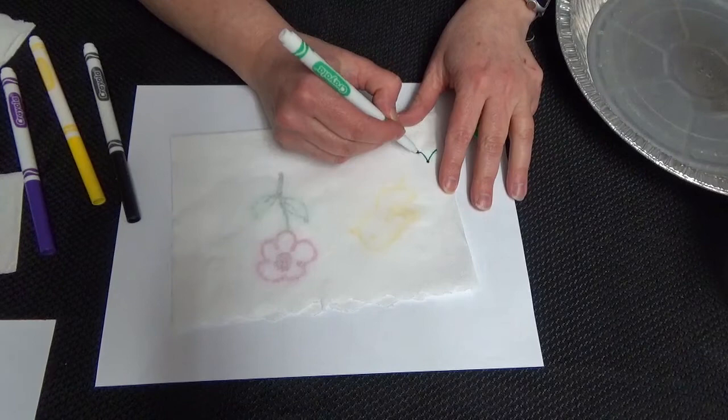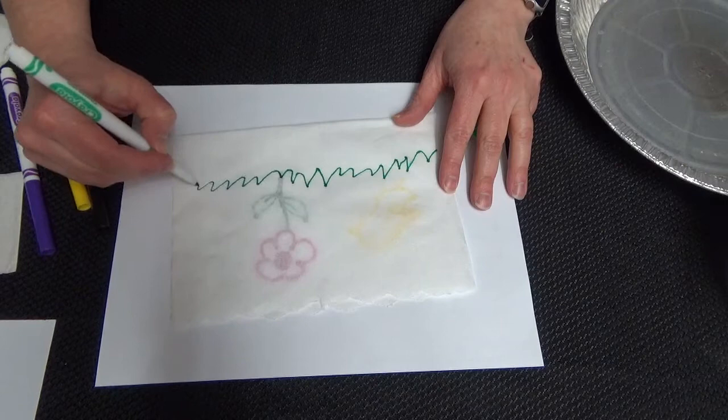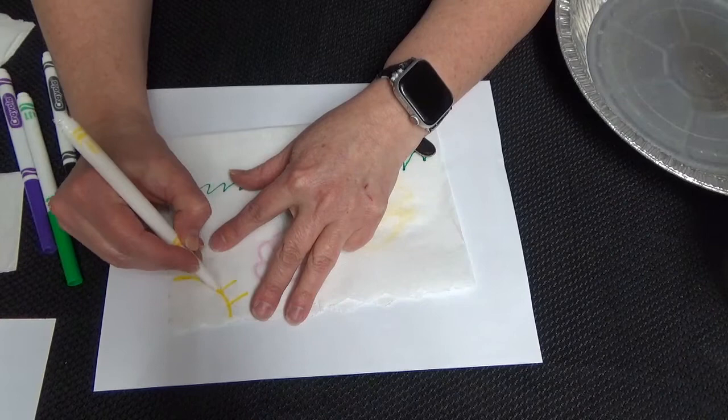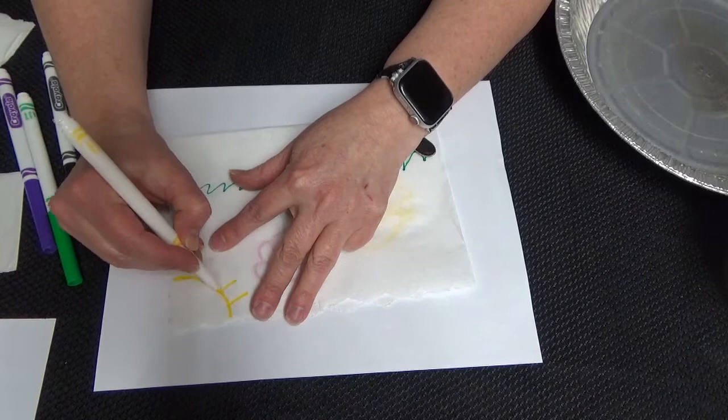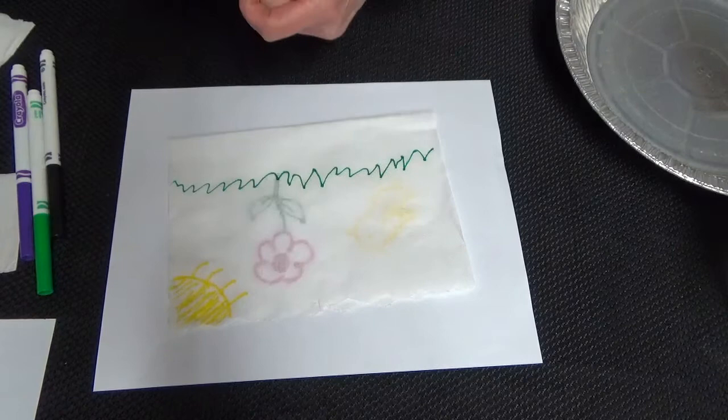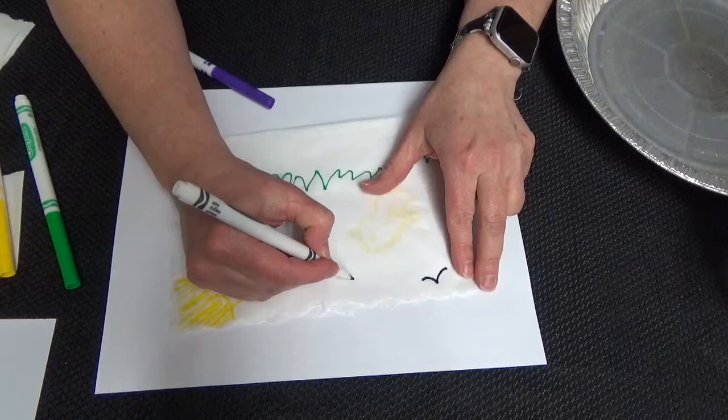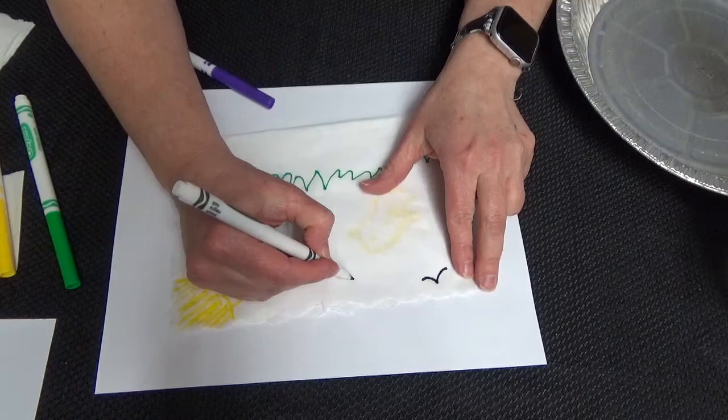So I'm going to draw some grass. There's the grass. And I think I'm going to draw a sun right up here in the corner. And I think I want to use, maybe I'll do some birds flying just like this on this other side right here.